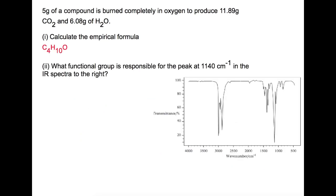Looking now at part 2 of this question. What functional group is responsible for the peak at 1140 per centimeter in the IR spectra to the right? If you look in the data book, you'll be able to find the different peaks that you will have for infrared. If you have a look in the section which has the 1140 part, you'll find that this is an alkyl ether. It's the only one which fits for this particular band.